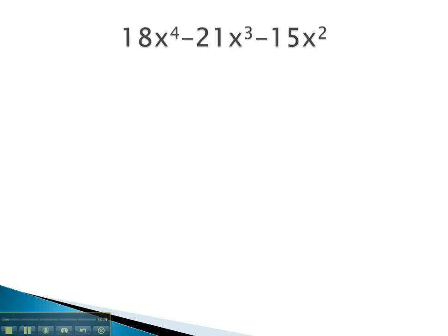For example, in this problem, you notice 18, 21, and 15 are all divisible by 3. Each term also has an x squared on it because we use the lowest exponent.